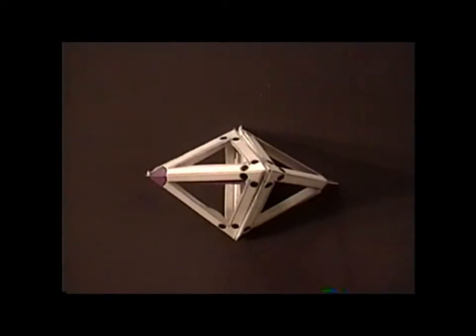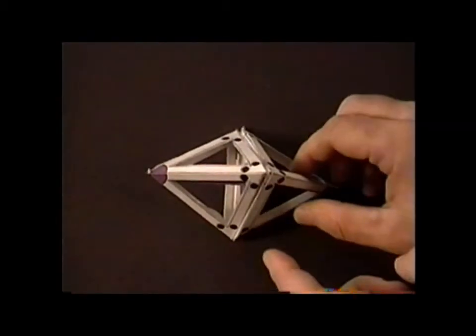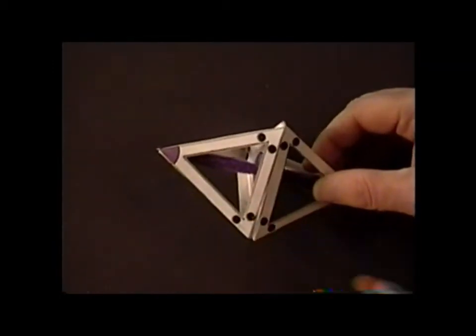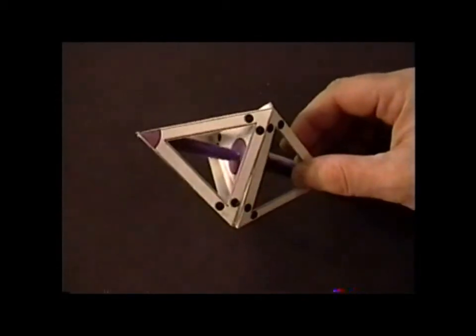For the case with two bonding pairs and three lone pairs, we find a linear structure. All three of the lone pairs occupy equatorial positions because that way they minimize electron-electron repulsion.